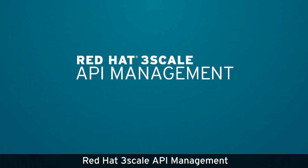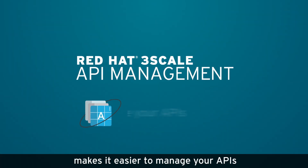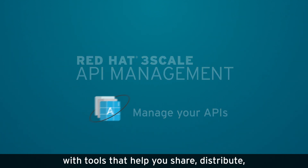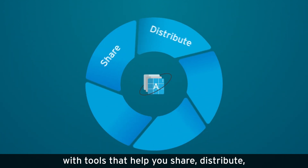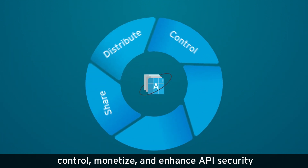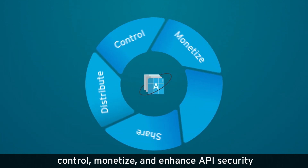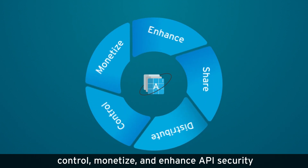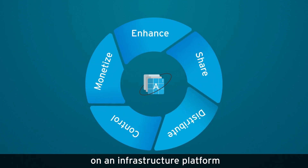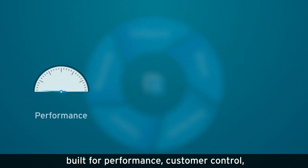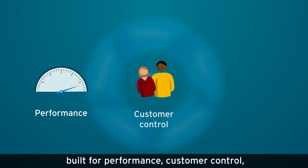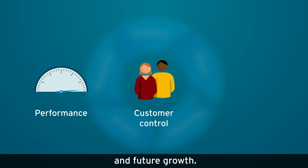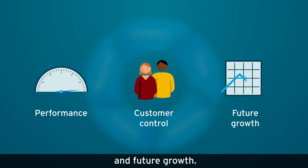Red Hat 3scale API management makes it easier to manage your APIs with tools that help you share, distribute, control, monetize, and enhance API security on an infrastructure platform built for performance, customer control, and future growth.